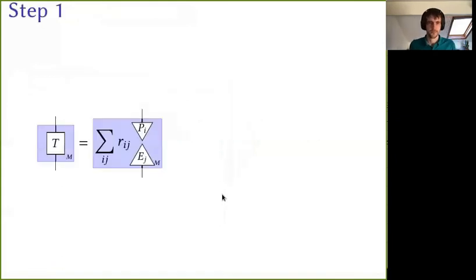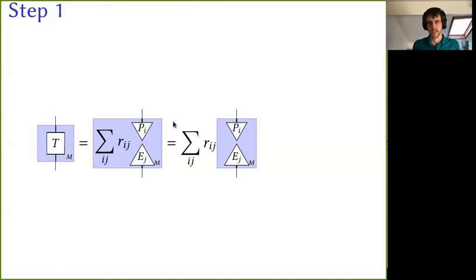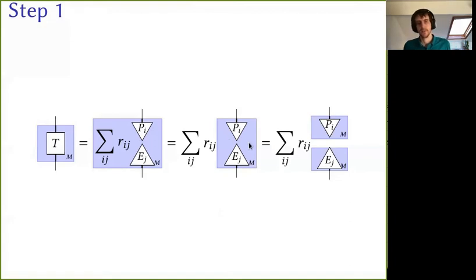Let me now run through the proof of this theorem. Step one is to use our formulation of local tomography to replace T by the corresponding linear combination of measure-and-prepare transformations. If we remember at the start I talked about how a convex combination of procedures at the operational level has to be represented by the same convex combination at the ontological level — there's a standard mathematical argument to extend that from convex combinations to all linear combinations. So that allows us to use linearity to pull out these coefficients outside of the blue box. And then we can use diagram preservation to say that the representation of each of the measure-and-prepare channels is just given by combining the representation of the measurement with the representation of the preparation.